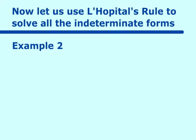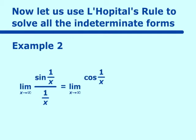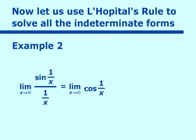Example 2: the limit as x approaches infinity of x·sin(1/x). This is zero times infinity. To use L'Hopital's Rule we convert it to a fraction: sin(1/x) over 1/x. Taking derivatives, the derivative of sin(1/x) is cos(1/x)·(−1/x²) and the derivative of 1/x is also −1/x², so these cancel. We get the limit of cos(1/x) as x→∞, which is cos(0) = 1.